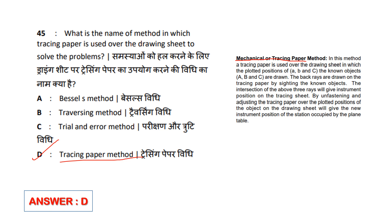The tracing paper method is used over the drawing sheet to plot the positions — the position of the object. This is mechanically called the tracing paper method. So the answer is option D.